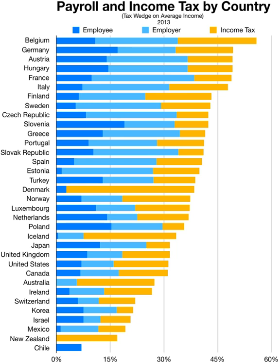Separate taxes are assessed against each taxpayer meeting certain minimum criteria. Many systems allow married individuals to request joint assessment. Many systems allow controlled groups of locally organized corporations to be jointly assessed. Tax rates vary widely. Some systems impose higher rates on higher amounts of income. For example, Elbonia taxes income below €10,000 at 20% and other income at 30%. Joe has €15,000 of income, so his tax is €3,500. Tax rate schedules may vary for individuals based on marital status.